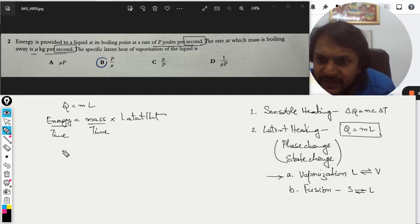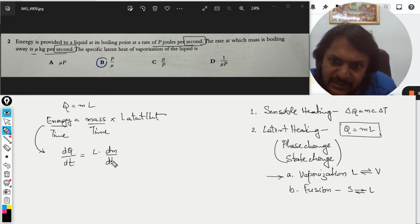How do we write this thing? See, whenever this rate thing comes here, it is written as dQ by dt equals L into dm by dt, or we can write it as Q dot equals L into m dot. All are different variations.